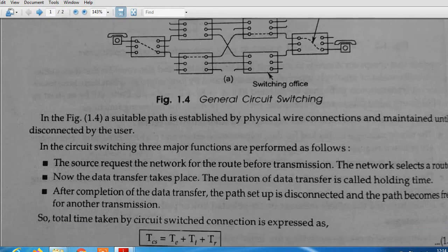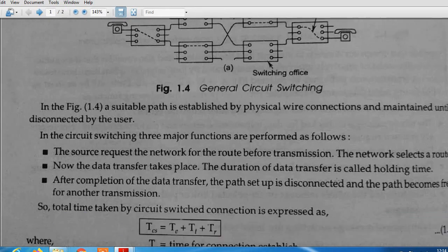In circuit switching, three major functions are performed. First, the source requests the network for the route before transmission. The network selects a route. Second, once the route is selected, data transfer takes place.